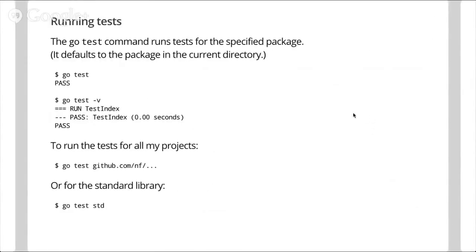The Go tool is used for running tests. You type go test on the command line to run tests for the current package. go test -v shows what's running — if everything goes well, you get PASS; if not, you get the failure explained. You can use wildcards: go test ./... tests all code in your repo, and you can use the std abbreviation to run tests for the standard library.